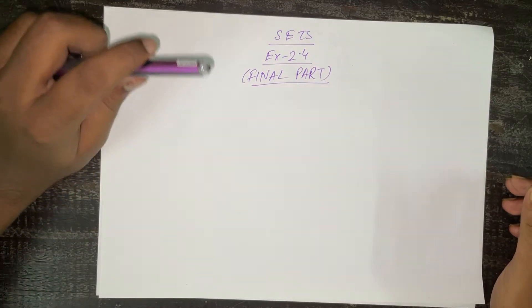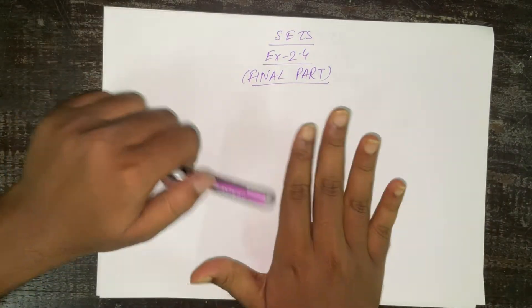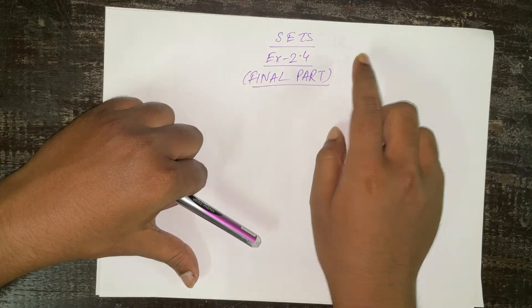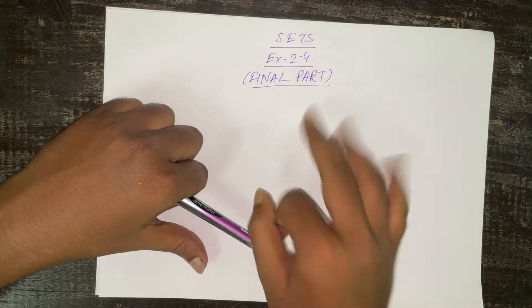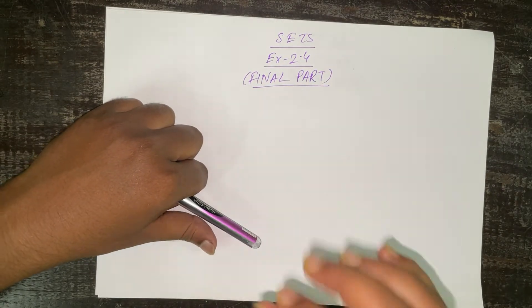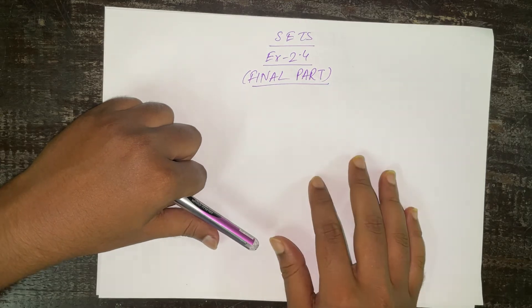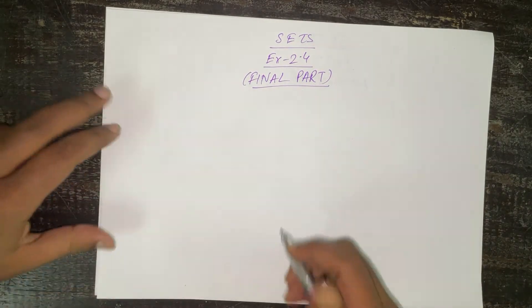Hello everyone, welcome to another video of Advanced Mathematics for class 9. We are going to do Exercise 2.4 and we are in the last part — we are left with only 3 sums: number 4, 5, and 6. So let us see how to solve them without wasting any time.